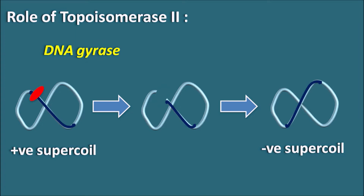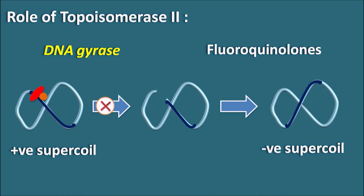If DNA gyrase is not present, DNA replication cannot proceed. Fluoroquinolones can bind to the site where DNA gyrase binds to the DNA. The fluoroquinolones form a ternary complex with topoisomerase-2 as well as with the DNA, so that they inhibit the opening as well as closing of the DNA supercoil, thereby inhibiting the relaxation of the DNA supercoil.